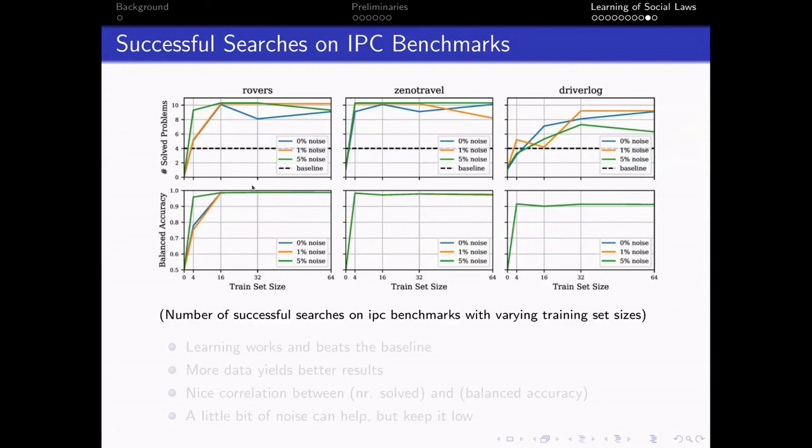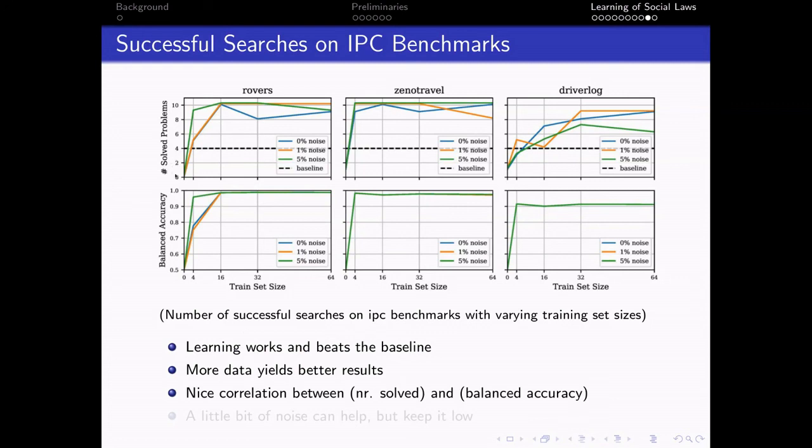In this figure, we see our model's performance with different training set sizes. And we see that learning actually works and beats the baseline. And more data yields better results. There is also a very nice correlation between the number of solved problems to the balanced accuracy metric of the GCN. And also, a little bit of noise can help as long as we keep it low.